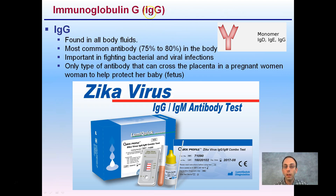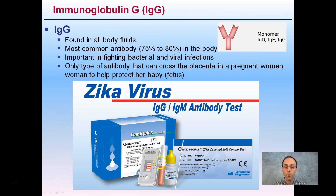IgGs — note the first 'g' is lowercase and the second 'G' is uppercase — are found in all body fluids. They're a monomer and the most common antibody found in the body, about 75 to 80%. They're important for fighting bacterial and viral infections, and they're the only type of antibody that can cross the placenta in pregnant women, helping protect the baby or fetus. They're also used in tests like the Zika virus IgG and IgM antibody test — if someone may have been exposed to the Zika virus, we can test for the antibodies to see if they're present.